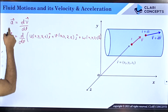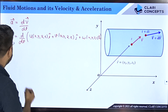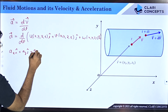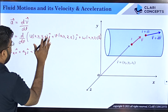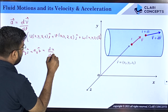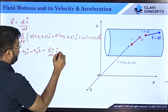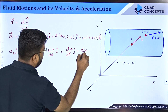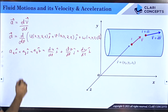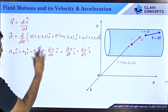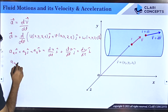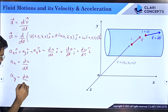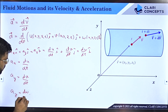Acceleration also has three components along x, y, and z: a = ax·i + ay·j + az·k. Comparing components, ax = du/dt, ay = dv/dt, and az = dw/dt. To know the acceleration I must know all three of these values.